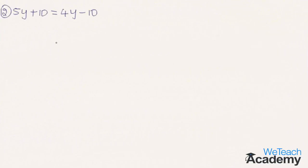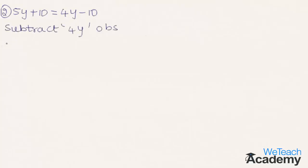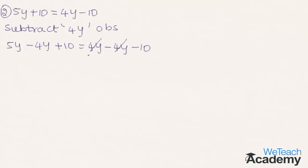Let us proceed to solve another example. To bring all variable terms to one side, let us subtract 4y from both sides. We get 5y minus 4y plus 10 equal to 4y minus 4y minus 10. On the RHS, plus 4y and minus 4y cancel. This simplifies to y plus 10 equal to minus 10.